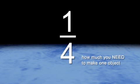The bottom number tells you how many parts you need to make a complete object, or a complete group. It's called the denominator.